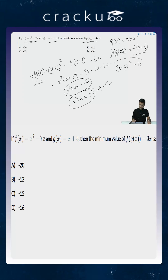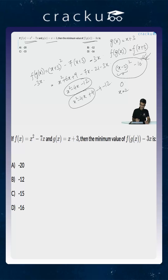We are trying to find the minimum possible value of this expression. The minimum value of x minus 2 whole squared is 0, because it is a perfect square. The minimum possible value is 0 and it happens when x is equal to 2. So the minimum possible value of the given expression will be minus 16, and this happens when x is equal to 2.